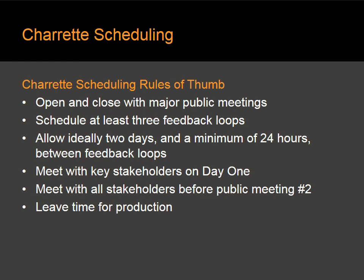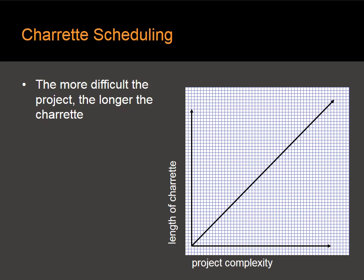Some rules of thumb. First of all, all Charettes open and close with major public meetings. We try to include three feedback loops within the Charette and allow a couple of days, or a minimum of 24 hours, between the feedback loops. You're going to meet with some key stakeholders on day one, and by the time you go to the second public meeting, you'll have met with all the key stakeholders. Don't forget to leave time for production. One important rule of thumb is that the more difficult the project, the longer the Charette — and the major difficulty components are budget, politics, and the difficulty of the design itself.